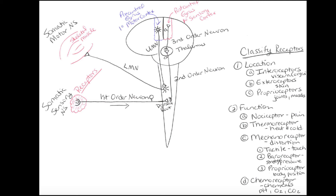We call this whole system — both the sensory and motor portions — somatic, because we're talking about the whole body. Skeletal muscles are more voluntary. In the autonomic nervous system, everything was automatic; that's why it was called autonomic. This is the somatic nervous system.